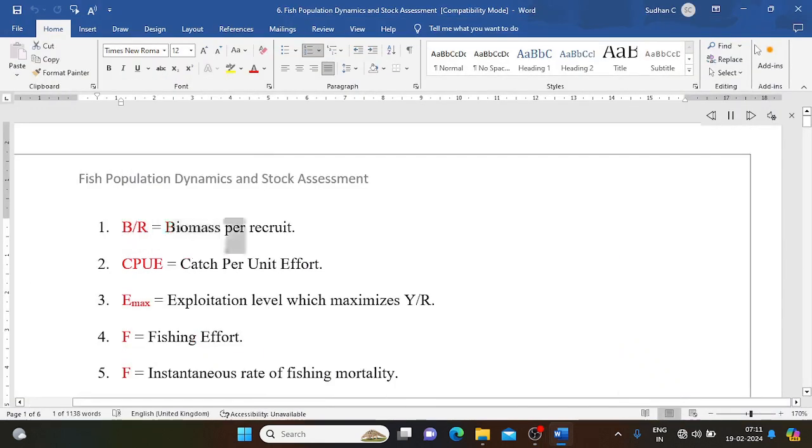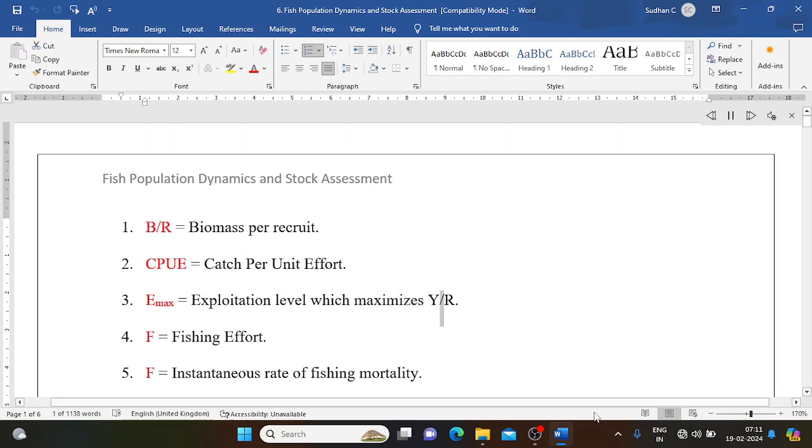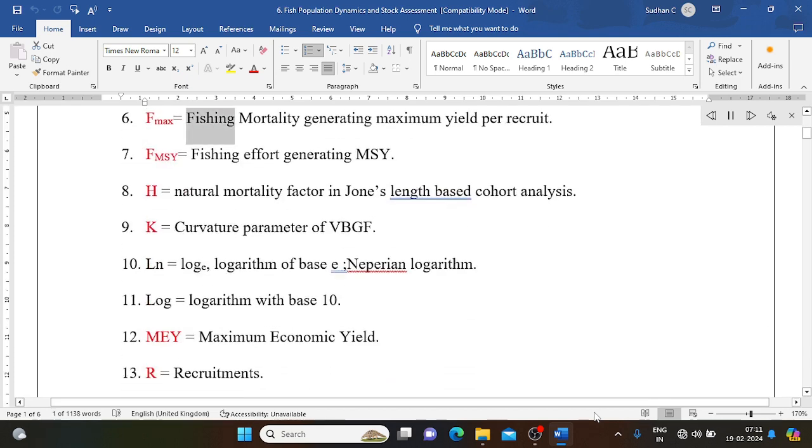B/R equals biomass per recruit. CPUE equals catch per unit effort. E max equals exploitation level which maximizes Y/R. F equals fishing effort. F equals instantaneous rate of fishing mortality. F max equals fishing mortality generating maximum yield per recruit. F MSY equals fishing effort generating MSY. H equals natural mortality factor in Jones length-based cohort analysis. K equals curvature parameter of VBGF. Ln equals loge logarithm of base e, Napierian logarithm. Log equals logarithm with base 10.